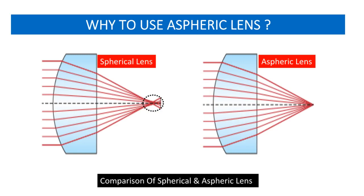You notice that the image to the left shows a spherical lens with significant spherical aberration compared to an aspheric lens with practically no spherical aberration. Thank you for listening.